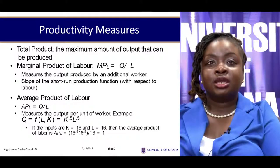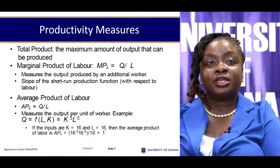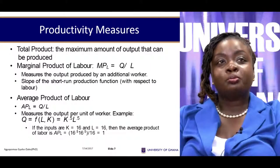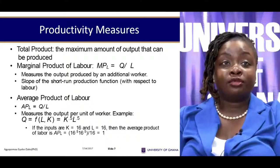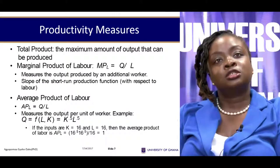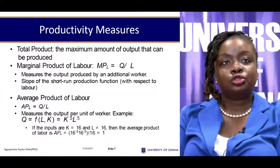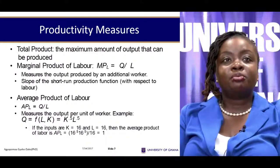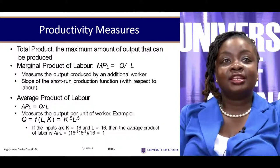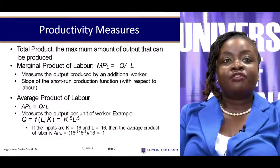Once we have that distinction right, we look at production in the short run and production in the long run. Before doing so, it's important to be able to measure productivity. One major measure is the total product, which tells us the maximum output producible with given inputs. Another measure is the marginal product of labor — the change in quantity divided by the change in labor units. We also have the average product of labor, which is output per unit of labor.